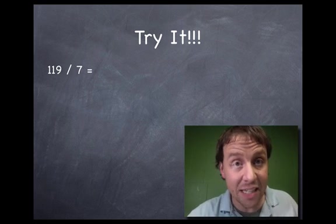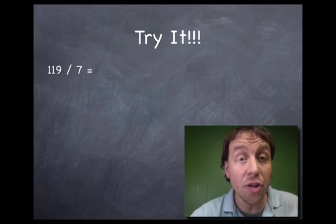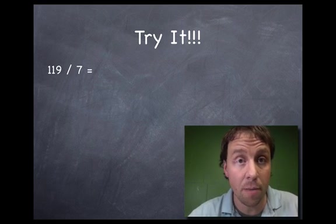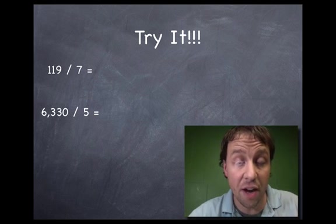The first two I'm going to give you do not have remainders. So if they wind up with a remainder, you did something wrong. 119 divided by seven. Give it a shot. The second one, a little bigger, a little more challenging. 6,330 divided by five.